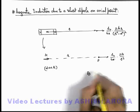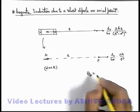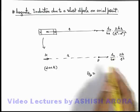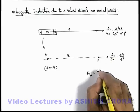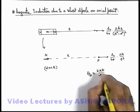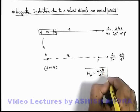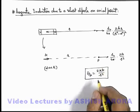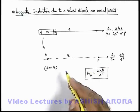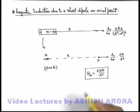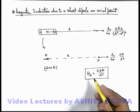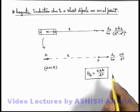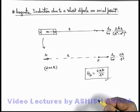This result at the axial point, B_P, can be written as mu_0 over 4π, taken as a constant of magnetostatics, so this can be written as 2kM by r³. I hope we find this result familiar with that of the axial electric field due to an electric dipole, which is 2kp by r³, where p was the electric dipole moment if we wish to find the electric field at an axial point. This is the result we'll use in coming sections.